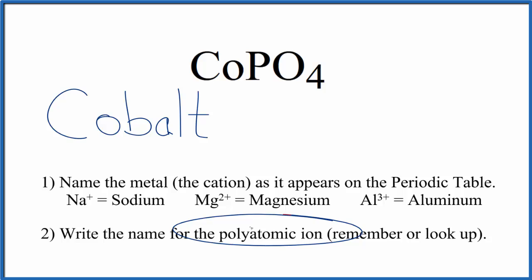Next, we write the name for the polyatomic ion. So you either remember that PO4, that's the phosphate ion, or if you're allowed, you look it up on a table of polyatomic ions. So at this point, we have cobalt phosphate as the name for CoPO4.